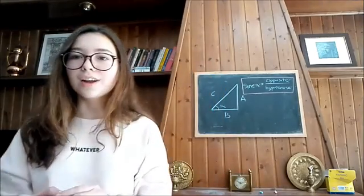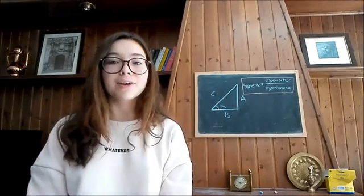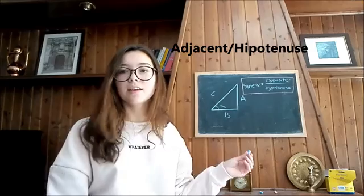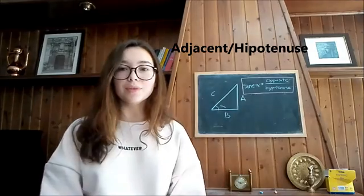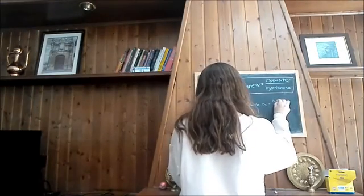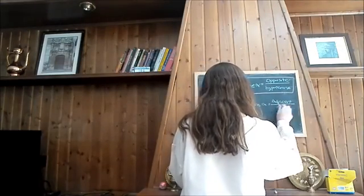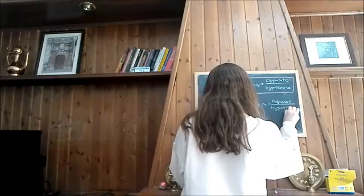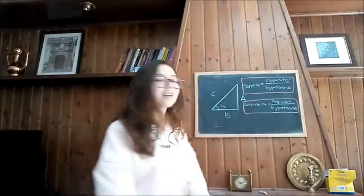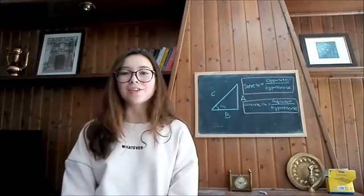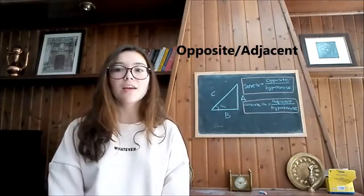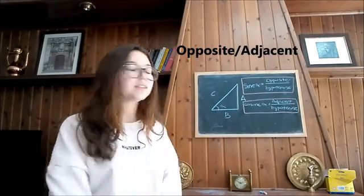To calculate the cosine, we have to divide the adjacent by the hypotenuse. And to calculate the tangent, we have to divide the opposite by the adjacent.